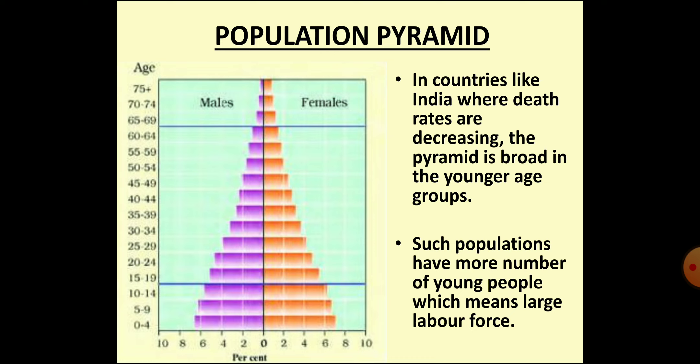In some countries like India, death rates — especially of infants — are decreasing. The population pyramid is broad at the younger age group as more infants survive and become adults. As the population pyramid of India reflects, a large proportion of the population is young, which is an indication of an active working population.